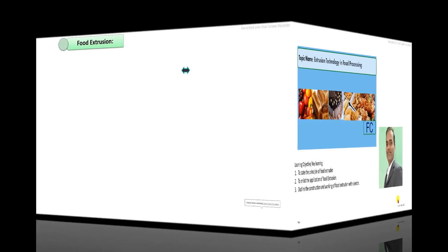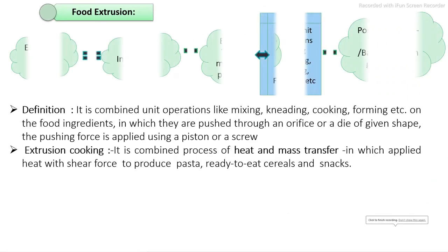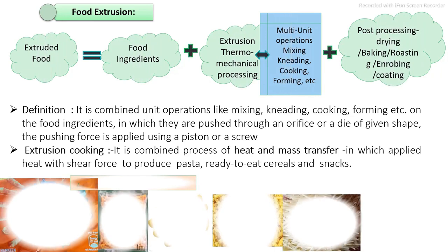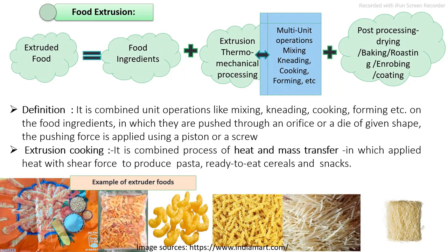Do you know how to prepare kurkure, puffed products, vermicelli? There are a number of products which are prepared by extrusion technology, including puffing process, pasta processing, vermicelli, and noodles processing. These are the main products which are prepared by food extrusion technology.